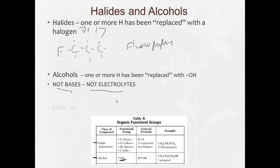When we name these, we're going to change the suffix to -ol. So let's say we take ethane and replace one of these hydrogens with OH. That would be ethanol.